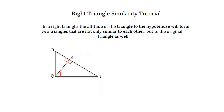Using what you know of triangle similarity, I'd like you to establish a similarity between those three triangles. The large triangle RTQ is similar to the small triangle RQS, and the medium triangle QTS. Let me show you how.